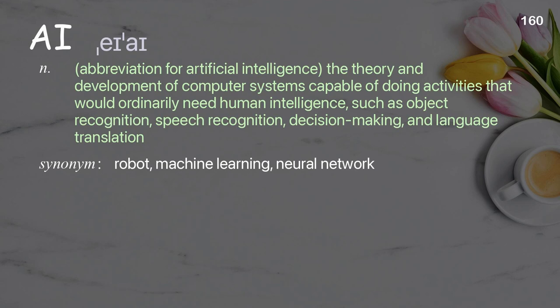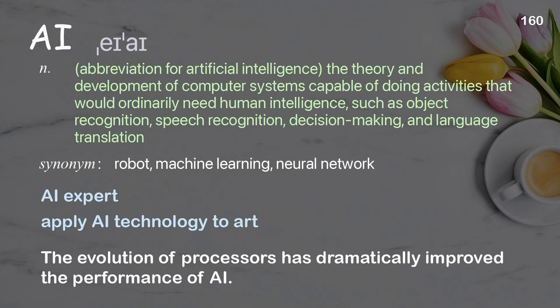AI: development of computer systems capable of doing activities that would ordinarily need human intelligence, such as object recognition, speech recognition, decision-making, and language translation. Examples: AI expert, apply AI technology to art. The evolution of processors has dramatically improved the performance of AI.